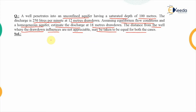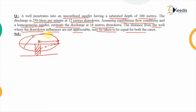The distance from the well where the drawdown influences are not appreciable may be taken to be equal for both cases. If this is the pumping well, this is the cone of depression. This entire region is known as the radius of influence and this entire zone is known as the zone of influence. Where the influence is not appreciable, we are talking about the Dupuit theory, so we will be using the equations given by Dupuit.